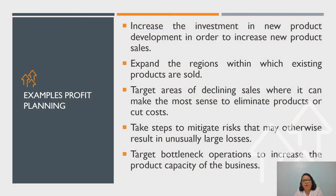Examples of profit planning: Number one, increase investment in new product development in order to increase new product sales. Number two, expand the regions within which existing products are sold. Number three, target areas of declining sales where it can make the most sense to eliminate products or cut costs. Number four, take steps to mitigate risk that may otherwise result in an unusually large loss. Number five, target bottleneck operations to increase product capacity of the business.